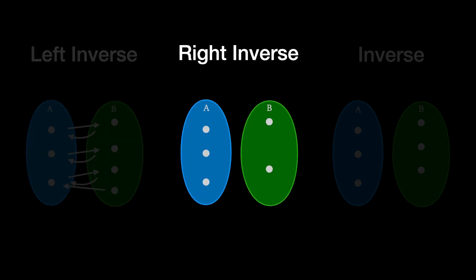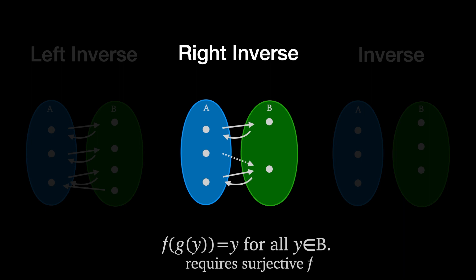g is a right inverse of f if we apply g to B first and then f maps the image of g back to the original elements in B. Since this applies to all elements in B, this means that f must be surjective.